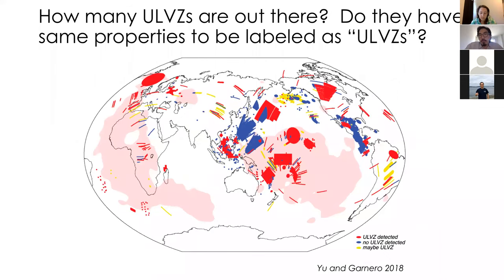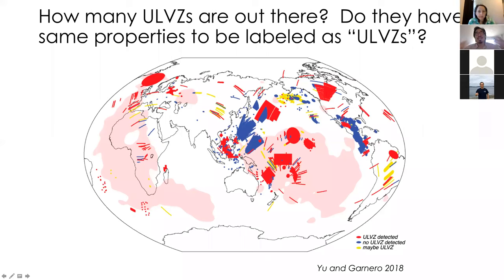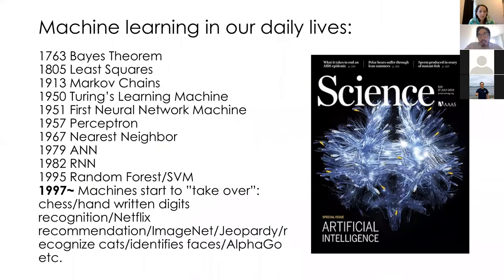Speaking of ULVZs in a global context, a compilation of all published ULVZs shows the detected regions or paths in red. Because individual ULVZ studies focus on one specific area at a time, the global map is largely patchy and incomplete. You know where ULVZs have been found, but you don't really know how their properties vary globally. To bring a panoptic view to studying ULVZs and lower mantle structures, we take a different approach using a recently developed machine-learning algorithm.